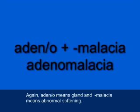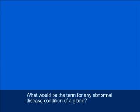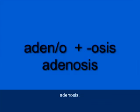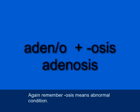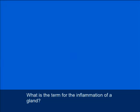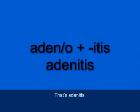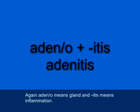What would be the term for any abnormal disease condition of a gland? Adenosis — A-D-E-N-O-S-I-S. Remember, -osis means abnormal condition. What is the term for the inflammation of a gland? That's adenitis — A-D-E-N-I-T-I-S. Adeno means gland, and -itis means inflammation.